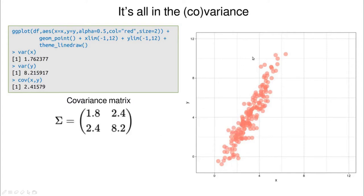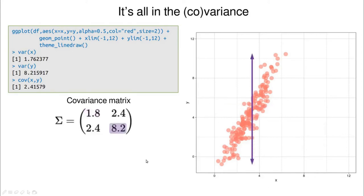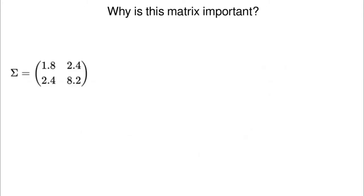Let's take this example. The covariance matrix for this example is this simple matrix. I have rounded the numbers a little bit to make the math simpler. If you take the square root of 1.8, two times that value gives more or less the range of variability of X. Similarly, the square root of the Y variance gives the range of variability of Y, and 2.4 gives the strength of the relationship between Y and X.